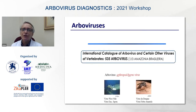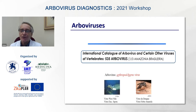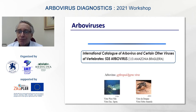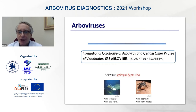Arboviruses are part of a large number of infectious agents. According to the International Catalog of Arbovirus and Other Viruses of Vertebrates, there are over 500 arboviruses in the Brazilian Amazon. We can find one-third of these. The name arbovirus comes from the word arthropod-borne virus, and from that we already understand that these viral infections are transmitted with vectors.